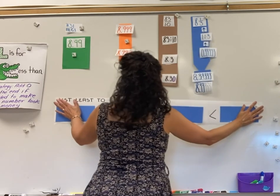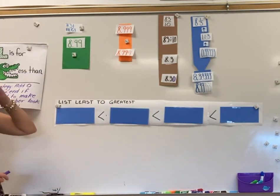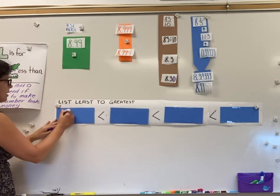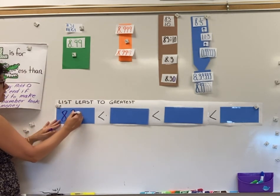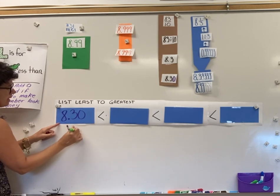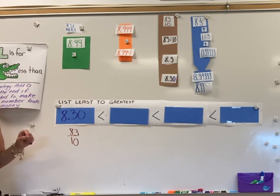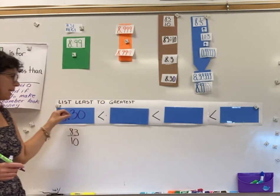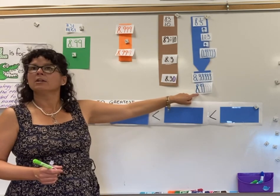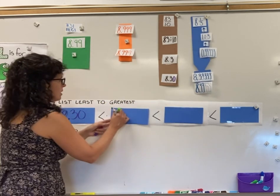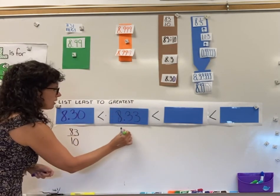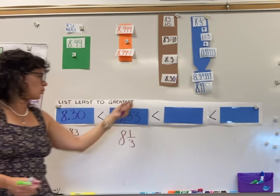Now let's arrange these from least to greatest. $8.30 is definitely the smallest one, so I'm going to put $8.30 first. Keep in mind, that was originally 83 over 10 — you can just grab this one and drag and drop it. Then the next one after 8.30 is $8.33, which originally was 8 and a third. So grab that one and drag and drop it there.